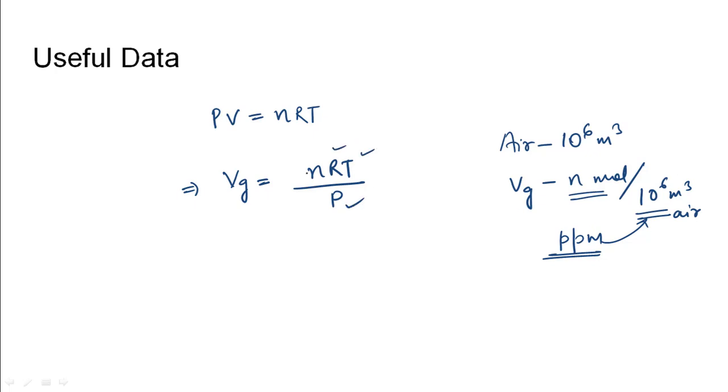Based on the values of P, R, T, and the number of moles of gas present in 10^6 meter cube of air, the volume can be found and that equals the parts per million. We have been given the concentration as 30 micrograms per meter cube, so in 10^6 meter cube of air we would have 30 microgram × 10^6 of sulfur dioxide, which becomes equal to 30 grams.